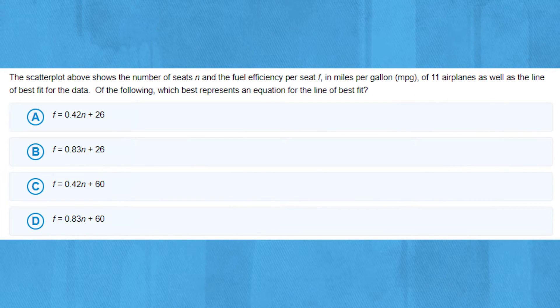You may find these types of questions on either the SAT or ACT and we often receive a lot of questions on these so let's use our lightboard to work through it. This question says the scatterplot above shows the number of seats n and the fuel efficiency per seat F in miles per gallon (MPG) of 11 airplanes as well as the line of best fit for the data. Of the following, which best represents an equation for the line of best fit?